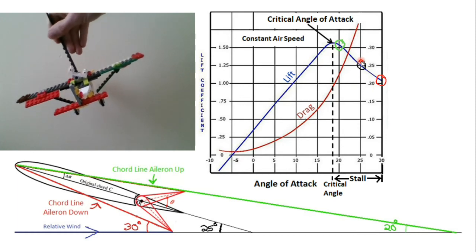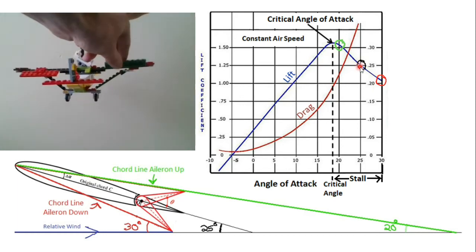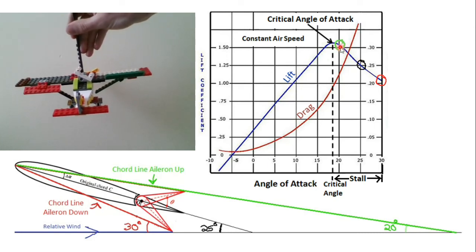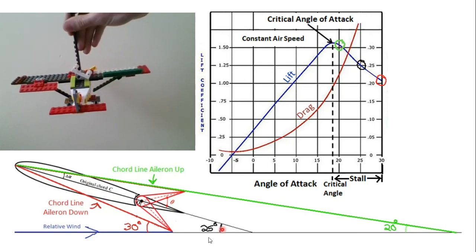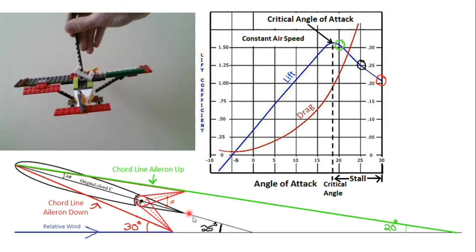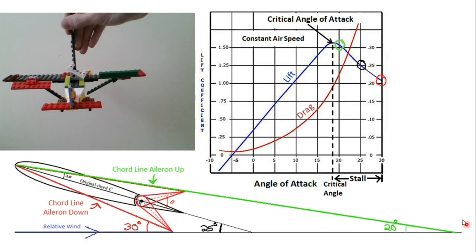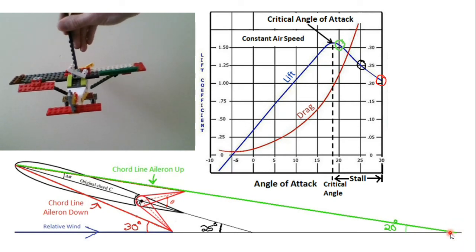And the opposite happens on the aileron going up. It's decreasing the angle of attack, which would normally decrease lift to make that wing drop and the airplane roll and turn in that direction. But now when the aileron goes up, you're getting closer to the critical angle of attack, which means you're getting closer to that optimum maximum lift angle. And so you're actually going to increase the amount of lift.